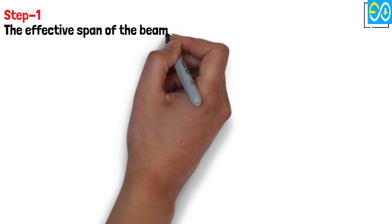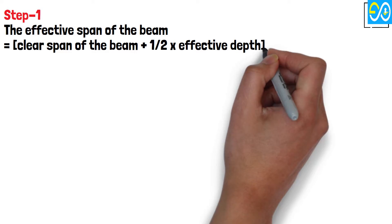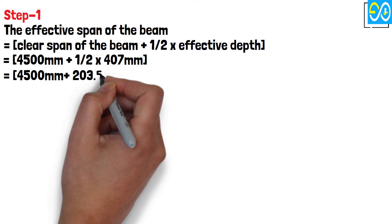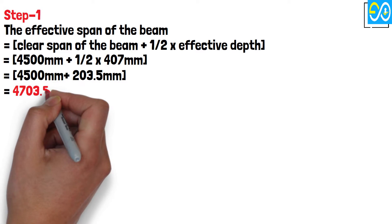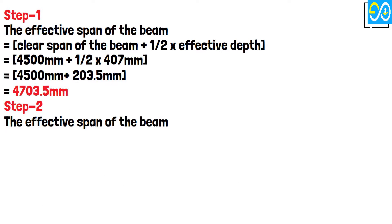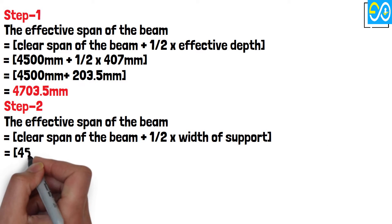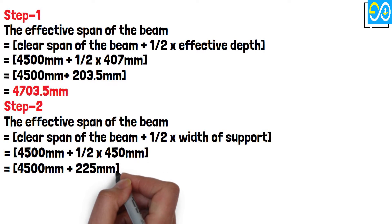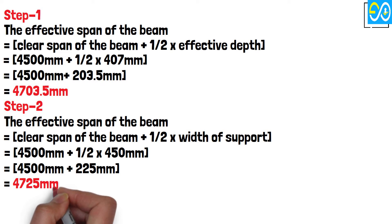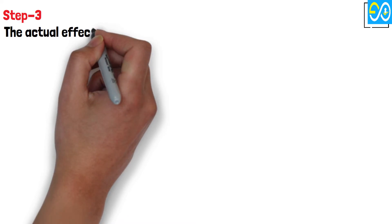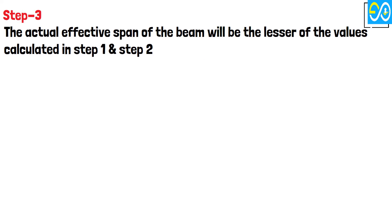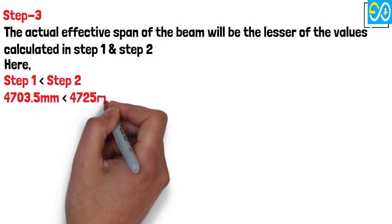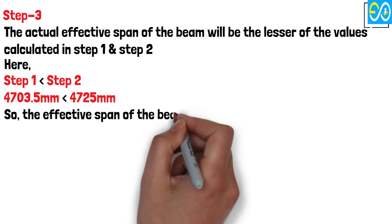As per IS 456: Step 1: Effective span = clear span + half the effective depth = 4,500 mm + (0.5 × 450 mm) = 4,500 mm + 225 mm = 4,725 mm. Step 2: Effective span = clear span + half the width of support = 4,500 mm + (0.5 × 450 mm) = 4,500 mm + 225 mm = 4,725 mm. Step 3: The actual effective span is the lesser of step 1 and step 2. The effective span of the beam is 4,725 mm.